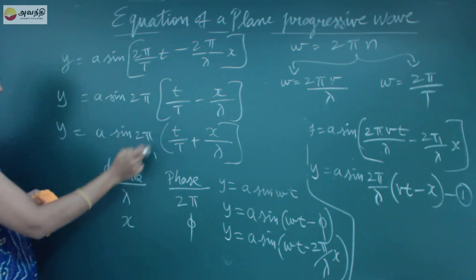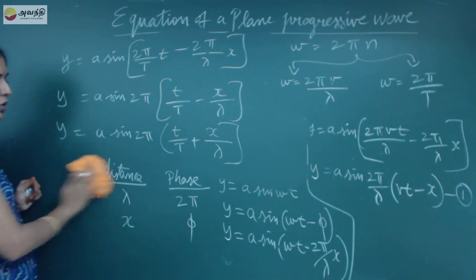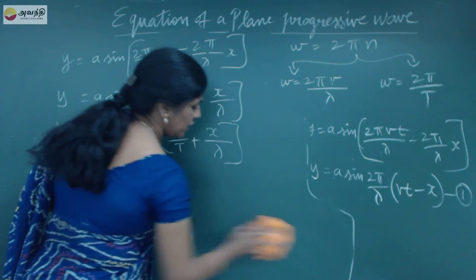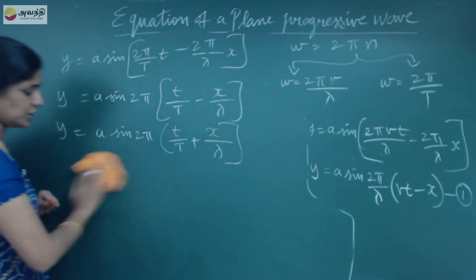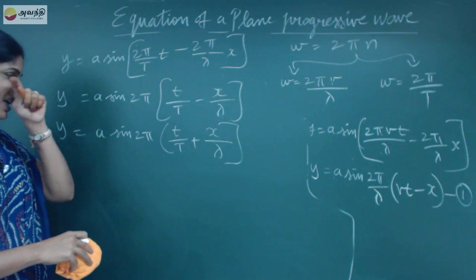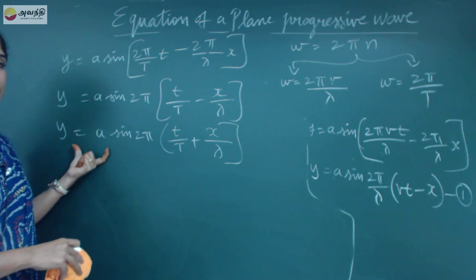When the wave travels in the opposite direction, the minus sign becomes a plus sign. So the displacement formula becomes y = a sin(2π(t/T + x/λ)). We have now obtained the displacement formula — the equation of a plane progressive wave in both directions.